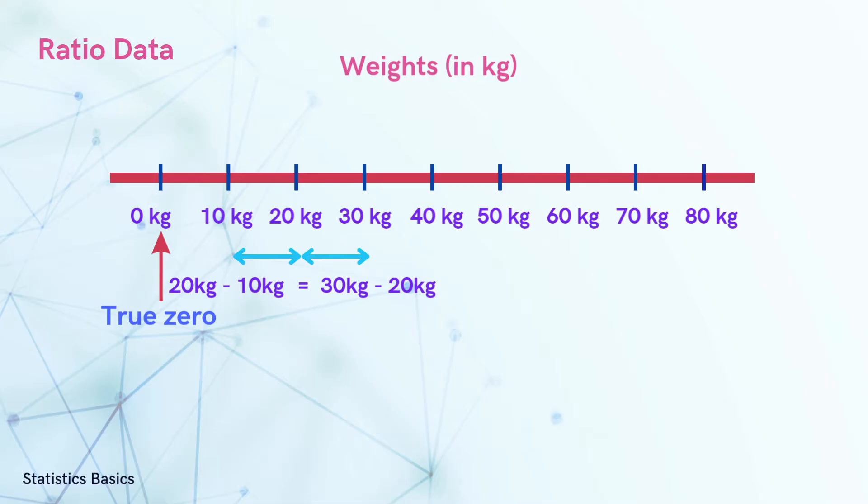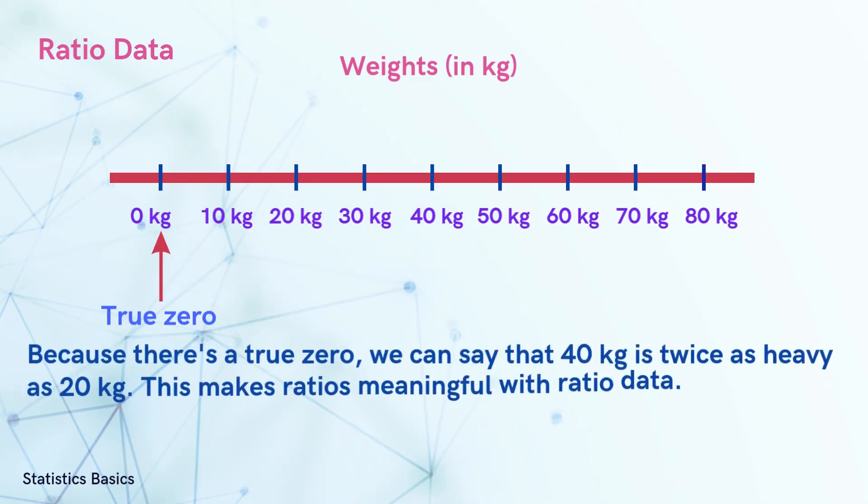Moreover, 0 kilograms represents the absence of any weight. Since there's a true zero, we can say that 40 kilograms is twice as heavy as 20 kilograms. This makes ratios meaningful with ratio data.